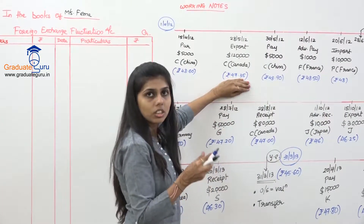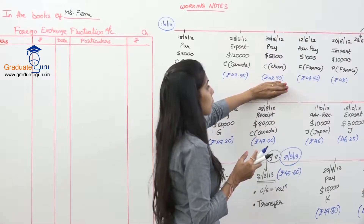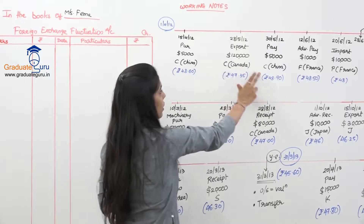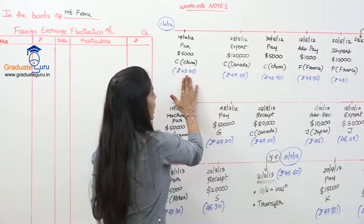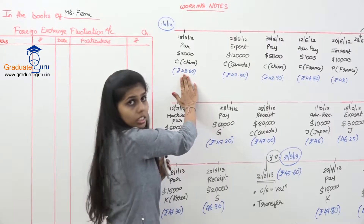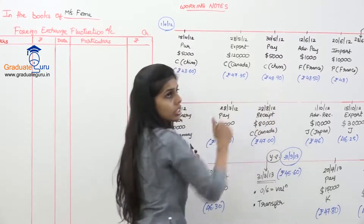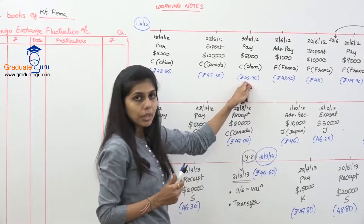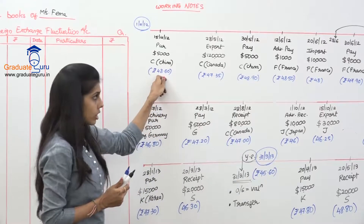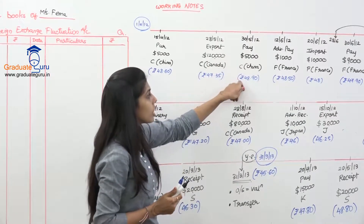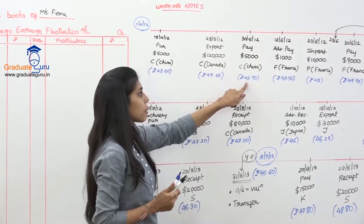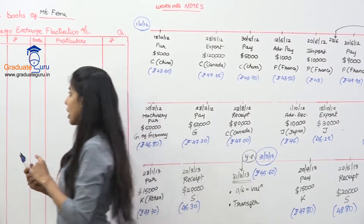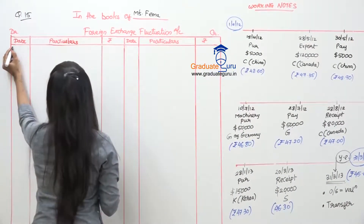Similarly, the export to C of Canada also has no exchange difference on sales date. Then when payment is made to Sea of China: the purchase was recorded at 48.60, but payment is made at 48.90. The difference of 0.30 represents extra payment - that is your exchange loss. So 0.30 × 5,000 = rupees 1,500 loss, which is debited to the FEF account.